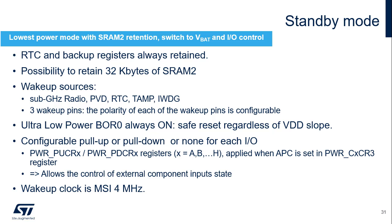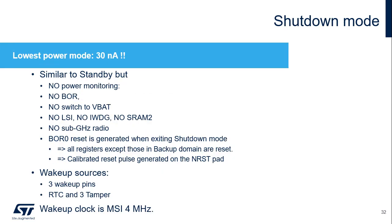The shutdown mode is the lowest power mode of the STM32WL5, with only 30 nanoamps at 1.8 volts. This mode is similar to standby mode but without any power monitoring. The brownout reset is disabled and the switch to VBAT is not supported in shutdown mode. The LSI is not available, and consequently the independent watchdog is also not available. A brownout reset is generated when the device exits shutdown mode, all registers are reset except those in the backup domain, and a reset signal is generated on the pad. The 80-byte backup registers are retained. The wake-up sources are the three wake-up pins and the RTC.